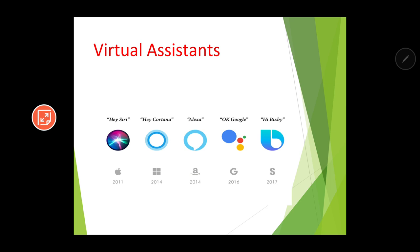IoT devices are controlled with the help of certain virtual assistants. The first virtual assistant developed was Apple's Siri — wake word: 'Hey Siri.' In 2014, Microsoft developed Cortana — 'Hey Cortana.' Also in 2014, Amazon developed the Echo device with the virtual assistant Alexa. In 2016, Google developed Google Assistant — 'OK Google.' In 2017, Samsung developed Bixby — 'Hi Bixby.'